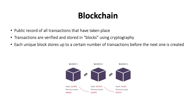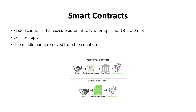Moving on to smart contracts — this is going to be a big part of our future. Smart contracts are coded contracts that automatically execute when specific terms and conditions are met, using basic code on the if-then rule. In simple terms: if X happens, then execute Y.